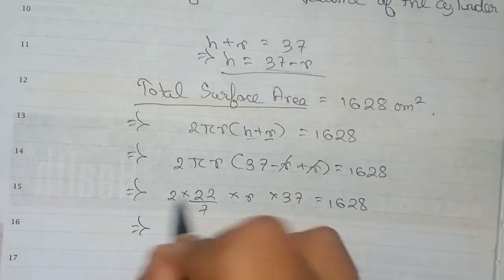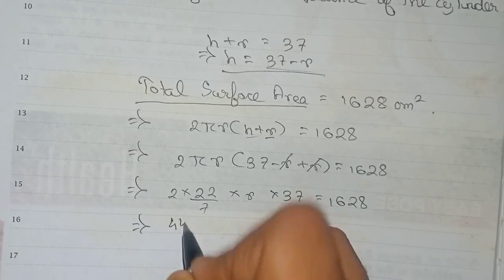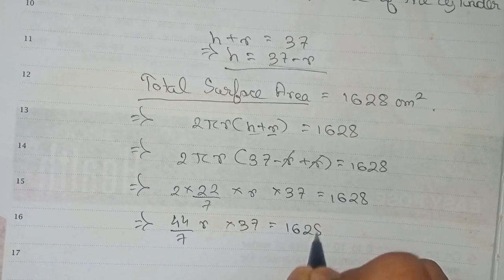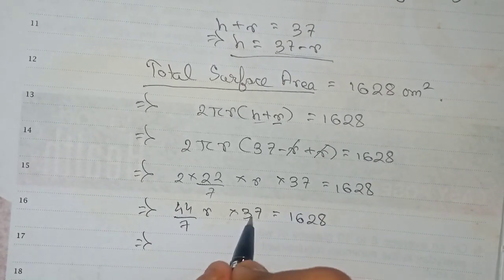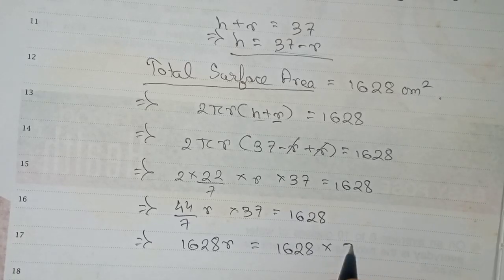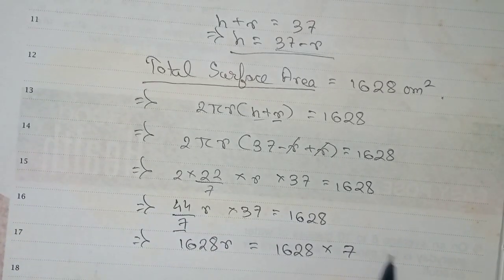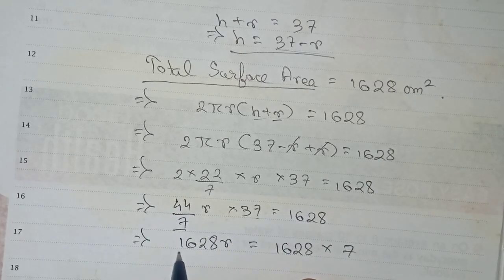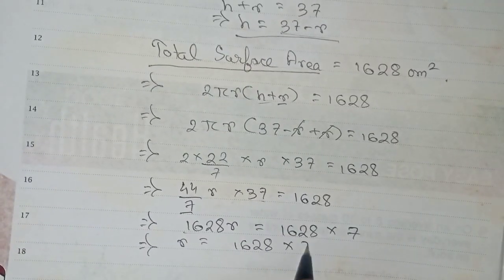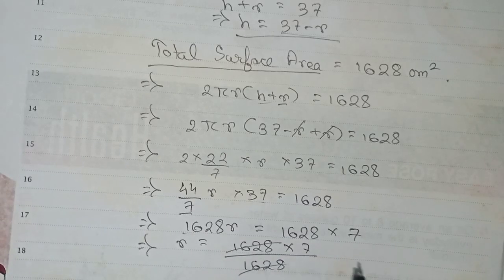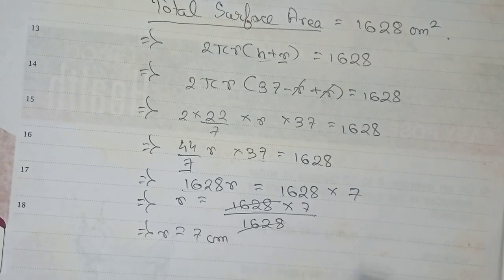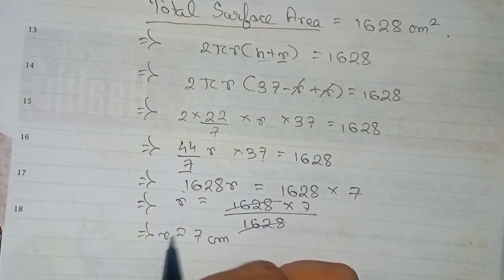So 2 times 22/7 becomes 44/7, and 44/7 times r times 37 equals 1628. Multiplying 44 by 37 gives 1628, so solving for r: r equals 1628 times 7 divided by 1628, which simplifies to r equals 7 centimeters.